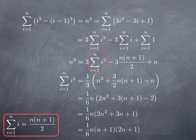And when I do that, I have 1 third times 1 half is 1 sixth times n. And what remains in the parenthesis is 2n squared plus 3 times n plus 1 minus 2. If I multiply things through, I get 2n squared plus 3n plus 3 minus 2, so that's just plus 1. So in the parenthesis I have 2n squared plus 3n plus 1.